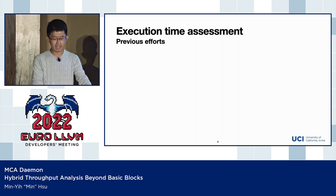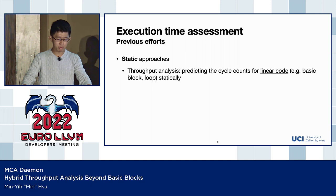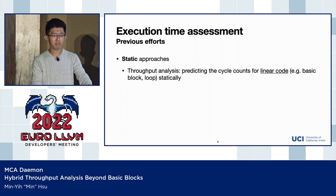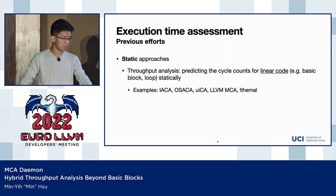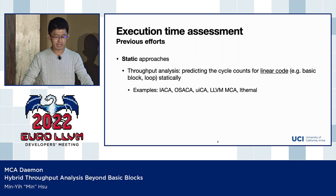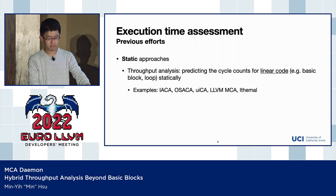Previously, people approached this problem primarily in two fashions: static and dynamic. In the static approach, one of the most known areas is called throughput analysis. Tools in this field usually predict cycle counts of relatively small or linear machine code areas — usually just a few basic blocks — in a static fashion. Famous tools include IACA, Intel's performance analysis tool, and UICA, the open-source version of it, and also LLVM-MCA, a similar tool built on the LLVM tooling ecosystem.